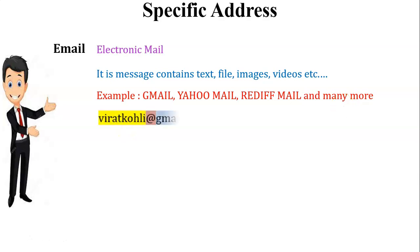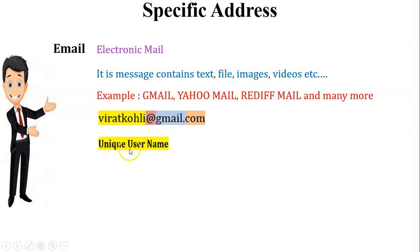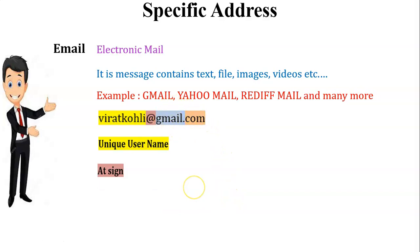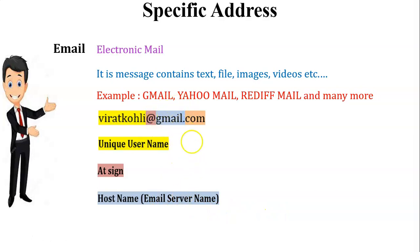Let us see an example of an email address. This email address is viratkohli@gmail.com. An email address is made up of four different parts. The first one is the username, which is unique and chosen by the particular user. The second one is the @ sign. The third one is the host name or email server name — here the email server is gmail. The fourth one is the top level domain — here it is .com.